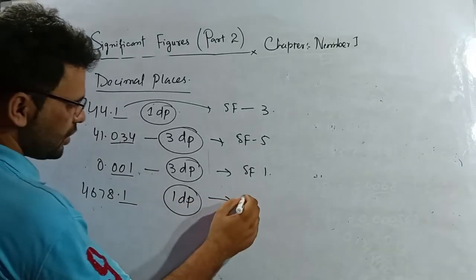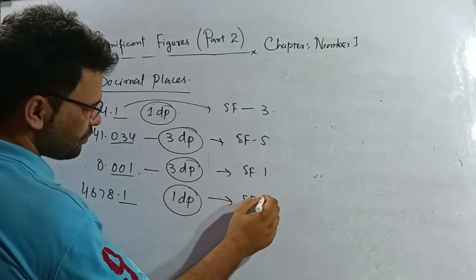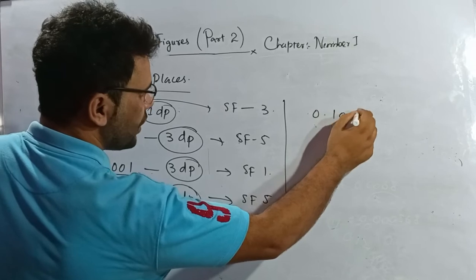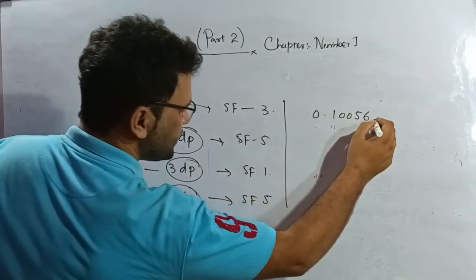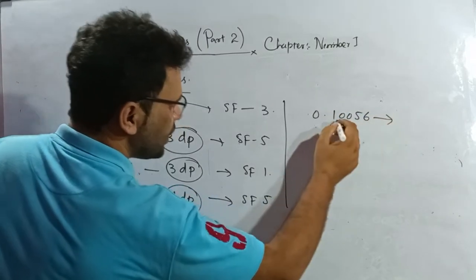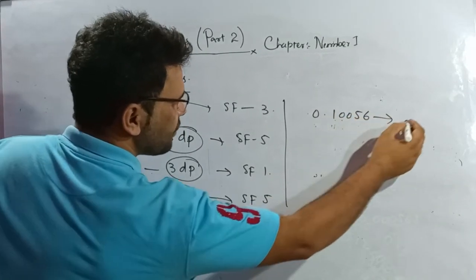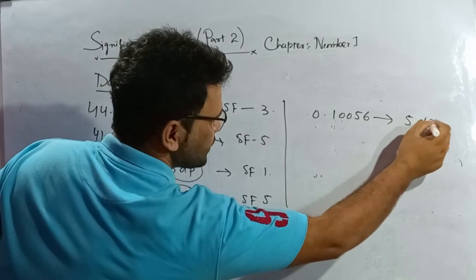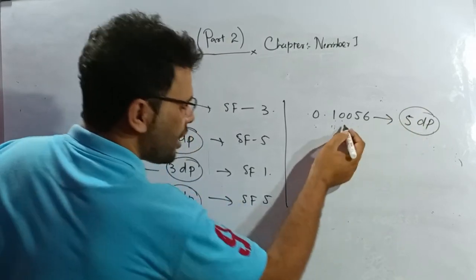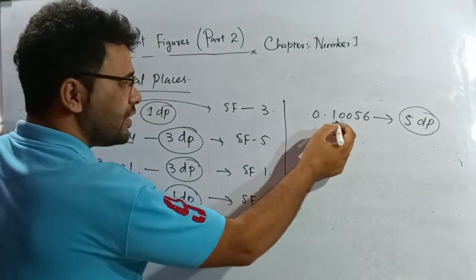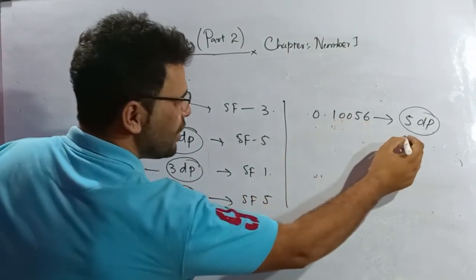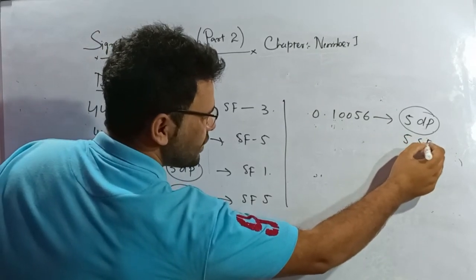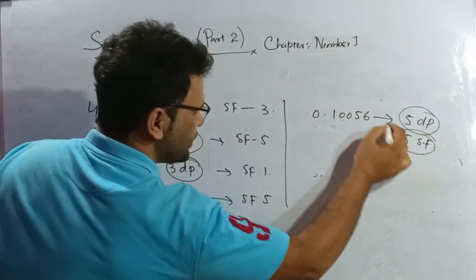For 0.10056, how many decimal places? One, two, three, four, five — so five decimal places. And how many significant figures? One, two, three, four, five — so five significant figures are there as well.